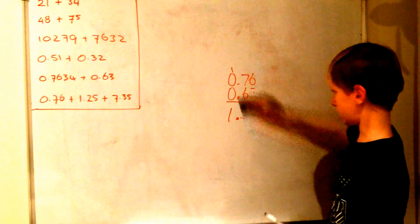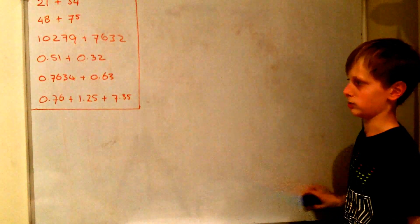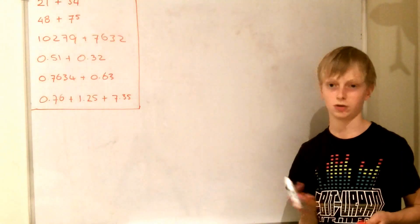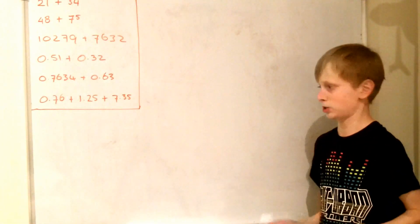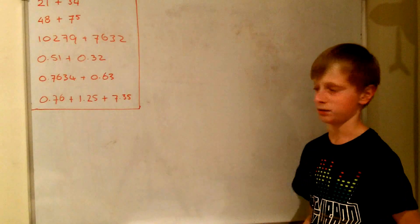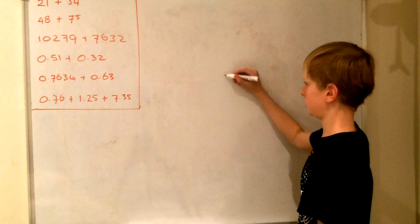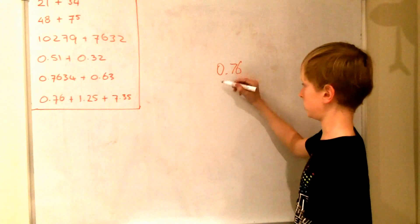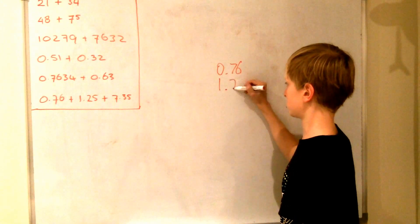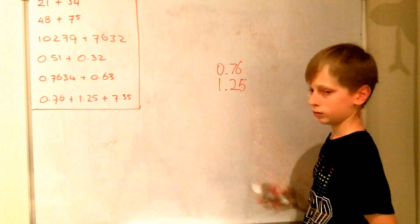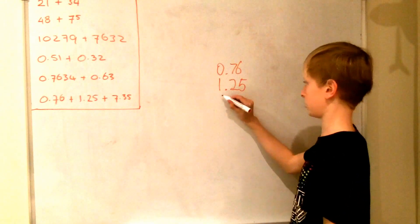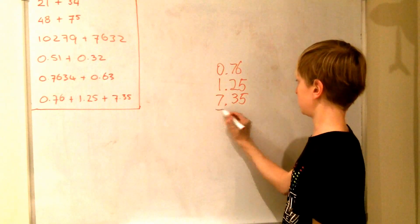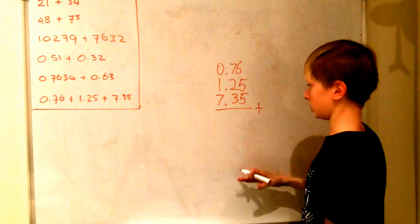So now I am also going to show you that you can also do this with more than two numbers. So instead of only using two numbers you can do 3, 4, 5, 6 or even 7 or even more. As many numbers as you like. So for example you can get 0.76 plus 1.25. Now we would just add the next numbers. We would just write underneath it. So 0.35. You can do this with as many numbers as you like. So just keep going down.